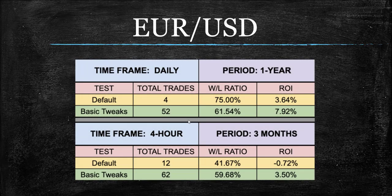Let's get into the tests on the EURUSD. This is right around 8% ROI on the daily. We have certainly shown indicators that have performed better than that, but this is not a bad starting point. It's got a good solid win-loss ratio and a healthy amount of trades to start out with. Keep in mind that number is going to go down when you start adding pieces onto the algorithm, because you're eliminating losing trades. But on the daily, I think that is quite solid.